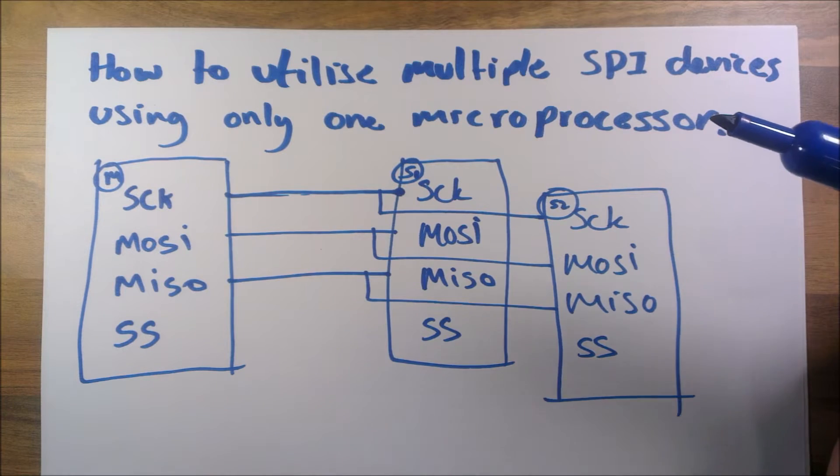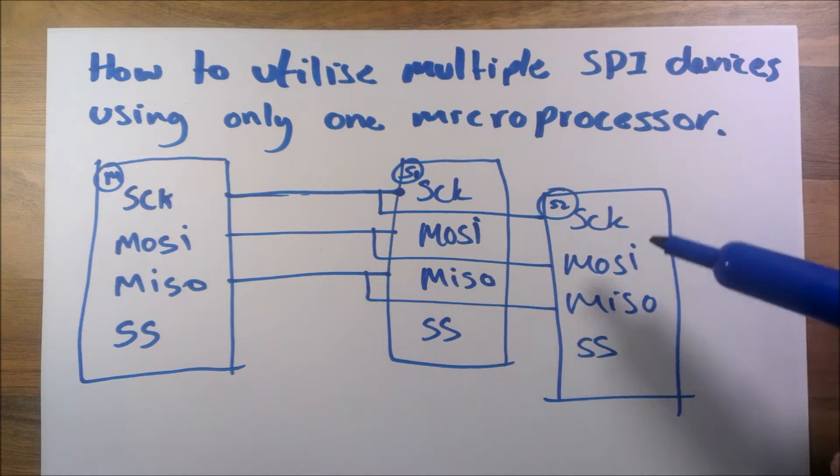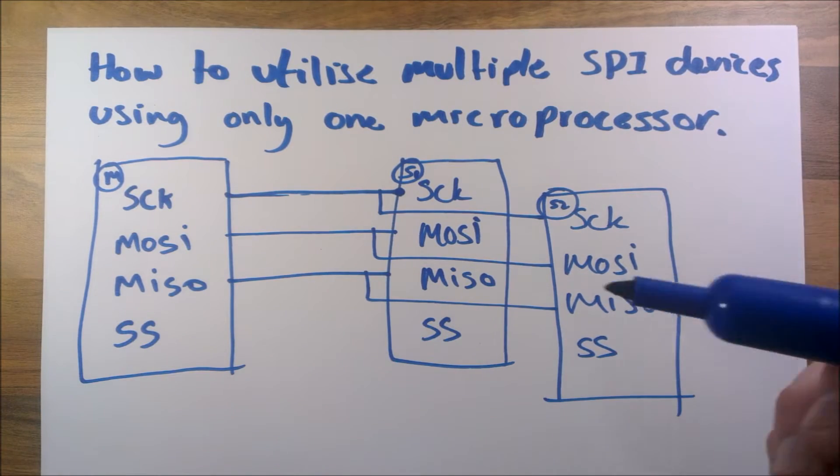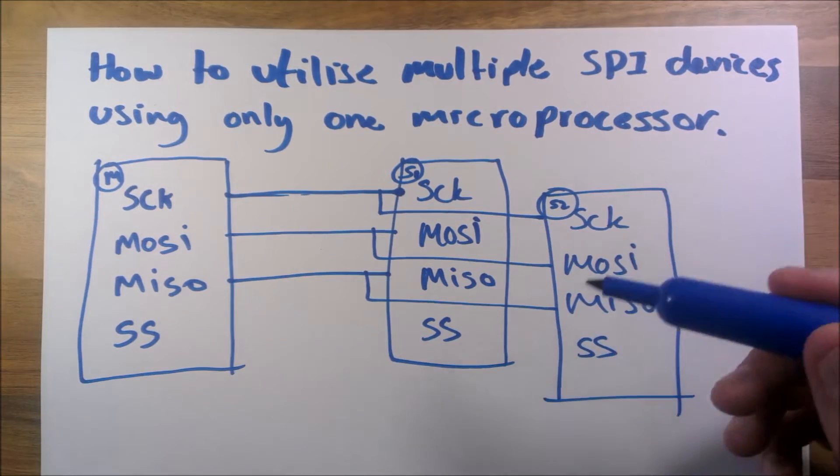I'm going to show you how to get around that. To understand and be able to get around it, we really need to have a basic understanding of how SPI works, so just very briefly I'll go through what some of these things mean.